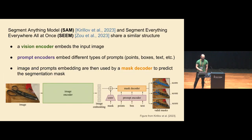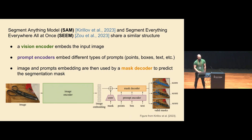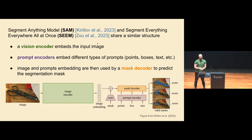These models have become pretty popular because they can be integrated into several downstream tasks. The two most relevant works are the Segment Anything Model (SAM) from Meta, and Segment Everything Everywhere All at Once (SEEM). The architecture of these models is pretty similar.